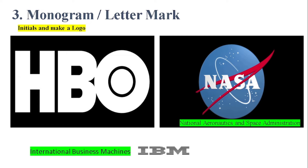The third type of logo is the monogram or lettermark. They take the initial letters and just combine them to make a logo. Like HBO, which stands for Home Box Office — they have just taken the letters H, B, and O, and their logo became very famous.